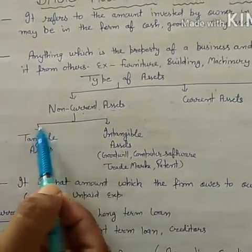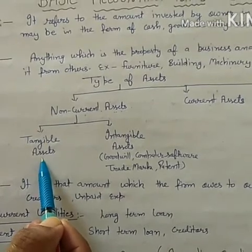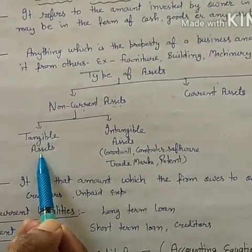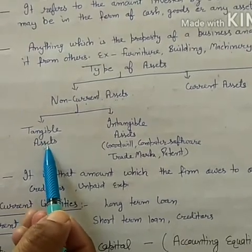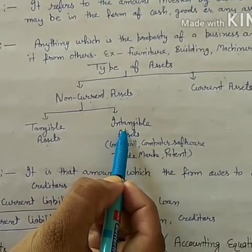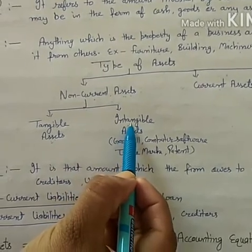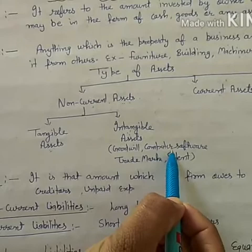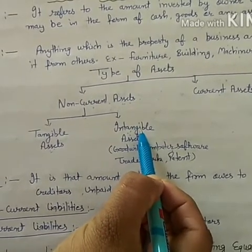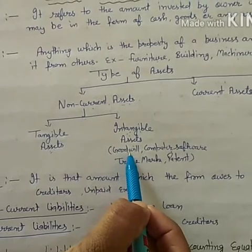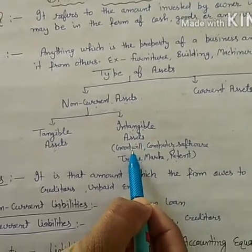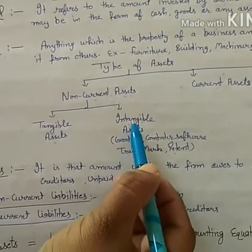Non-Current Assets are divided into two categories. First is Tangible Assets — those which can be seen, like furniture, machinery, and building. Second is Intangible Assets — those which cannot be seen but exist, like Computer Software. Terms like Goodwill, Trademark, and Patent are also Intangible Assets. Goodwill means the reputation of any business, and Trademark means the logo of any business.